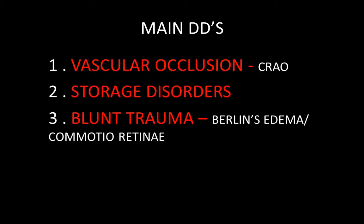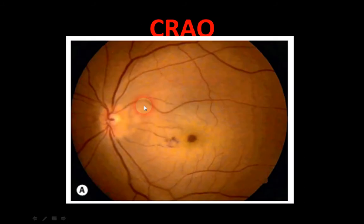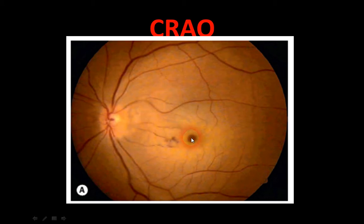There are three main differential diagnoses for cherry red spot: number one, vascular occlusion — specifically central retinal artery occlusion; number two, storage disorders; and number three, blunt trauma. In blunt trauma there is retinal edema — called Berlin's edema or commotio retinae. In central retinal artery occlusion, occlusion of the artery makes the entire fundus appear pale, and because the macula is very thin, the underlying choroid shines through, producing the cherry red spot.